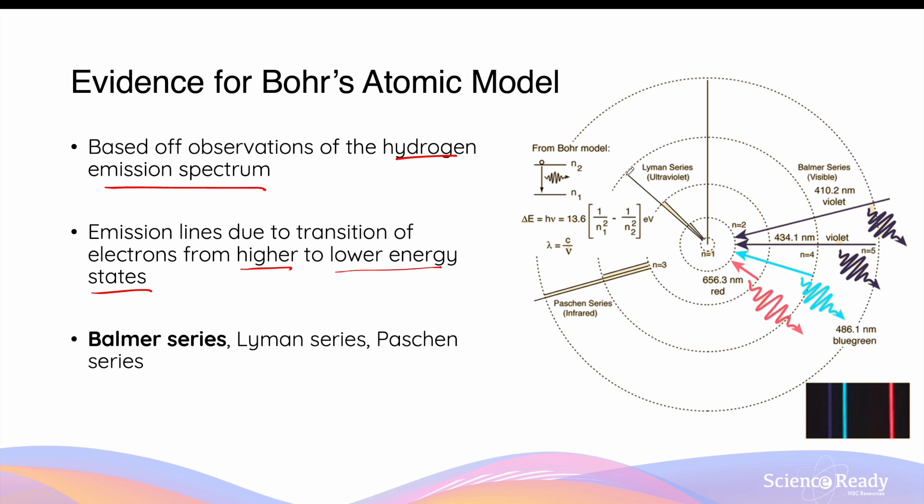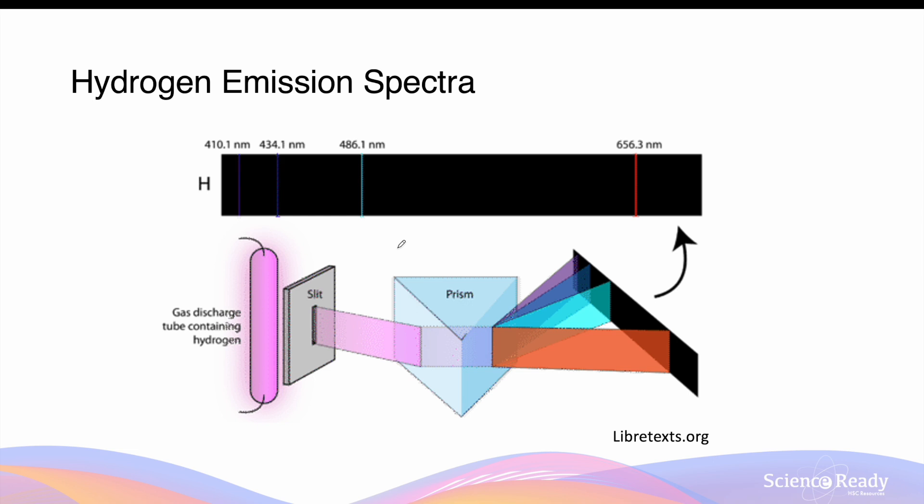When electrons move from a higher orbit to the first electron orbit, N equals 1, they produce ultraviolet radiation, and these are known as Lyman series. When the electrons return to the third orbit, N equals 3, they release infrared radiation, and this is known as the Paschen series. Let's focus on the Balmer series because visible light is a lot easier to observe compared to other parts of the electromagnetic spectrum. Light from a gas discharge tube containing hydrogen gas can be passed through a glass prism whereby dispersion occurs producing the emission spectrum shown here.